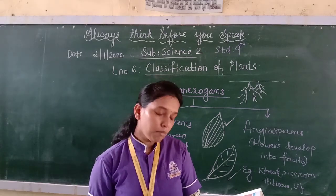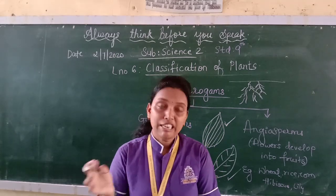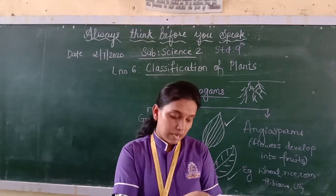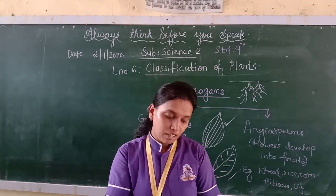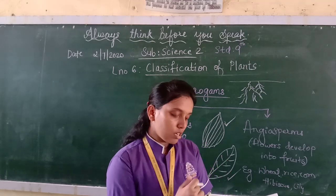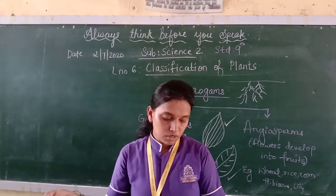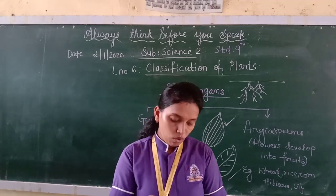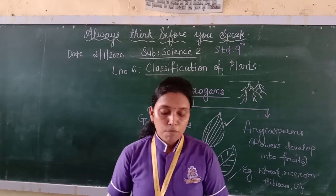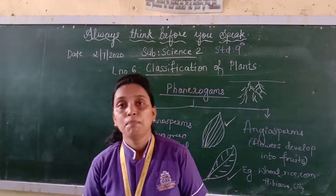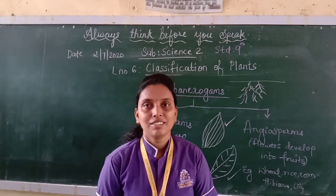A sketch diagram summarizes the kingdom Plantae classification. Kingdom Plantae is divided into cryptogams and phanerogams. Cryptogams are further divided into thallophyta, bryophyta, and pteridophyta. Phanerogams are divided into gymnosperms and angiosperms, wherein angiosperms are further divided into dicotyledonous and monocotyledonous plants. I hope you have understood this classification of plants. Do read the chapter and understand it. Thank you.